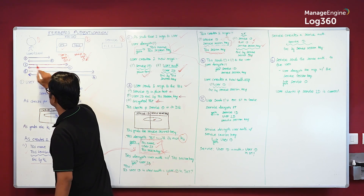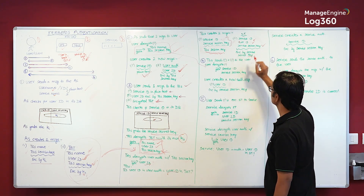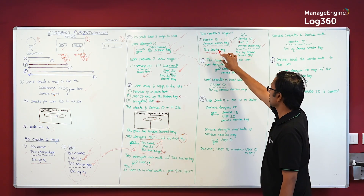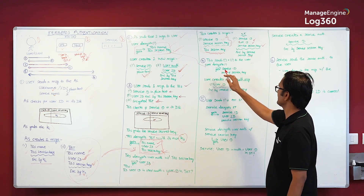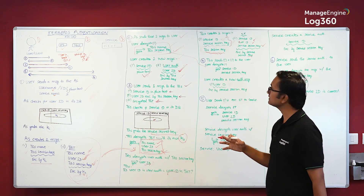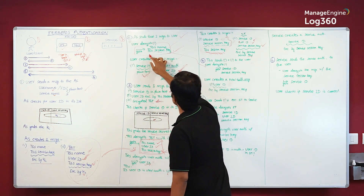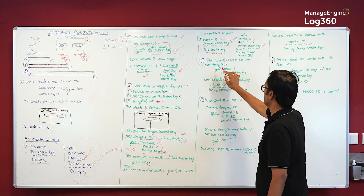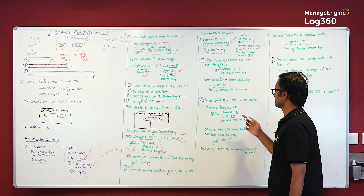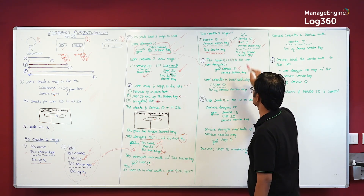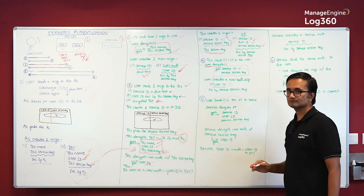Step four: the TGS sends both messages to the user — the Service ID plus service session key (encrypted by the TGS session key), and the encrypted service ticket. The user can easily decrypt the first message using the TGS session key it already holds, retrieving the Service ID and the service session key.